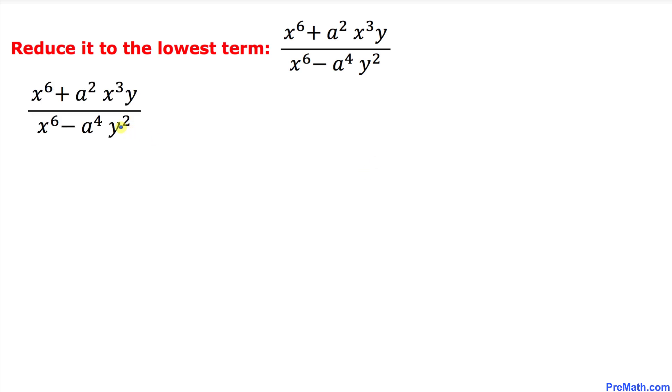Here's our given rational expression: x^6 plus a^2 x^3 y divided by x^6 minus a^4 y^2.